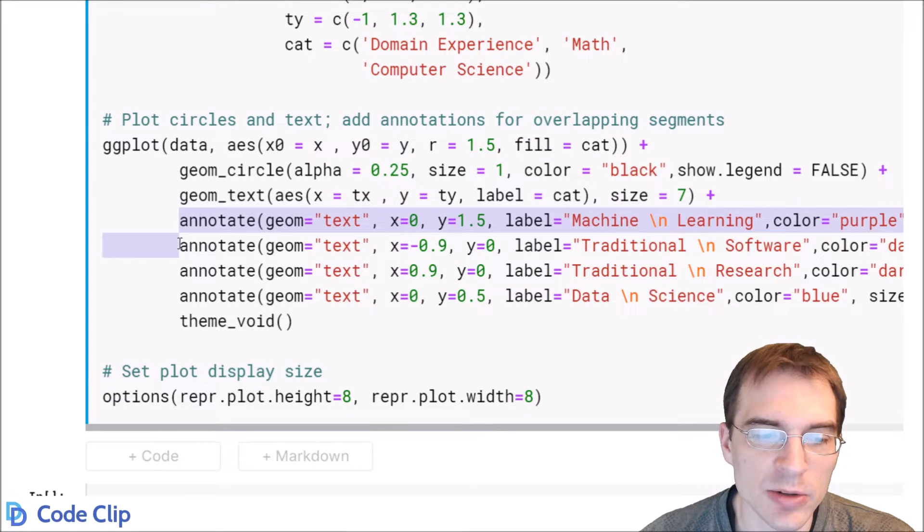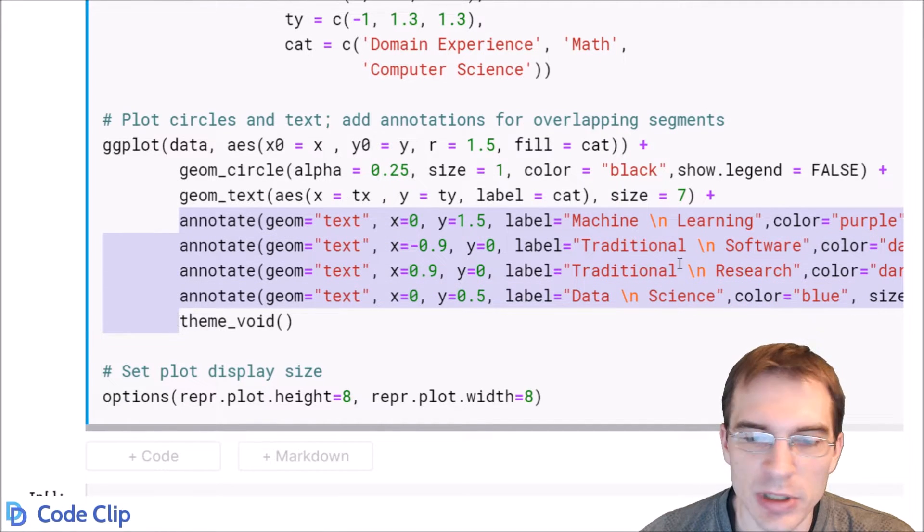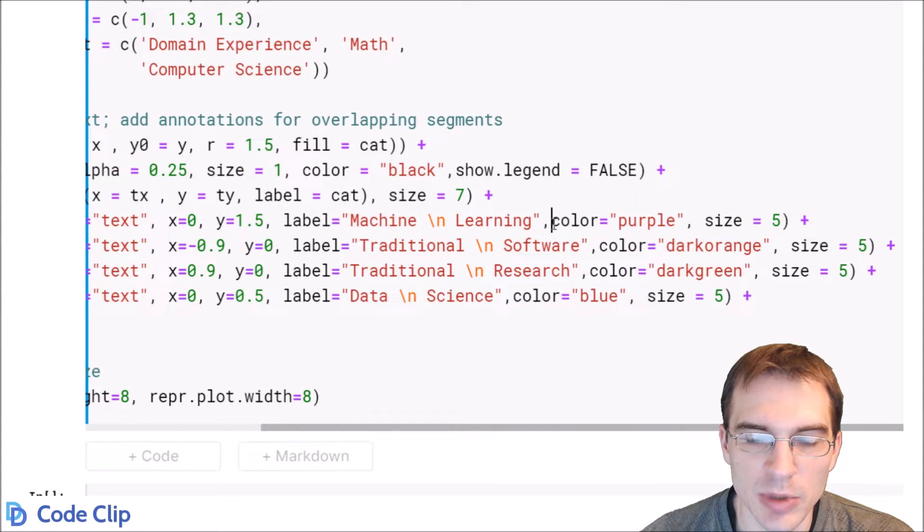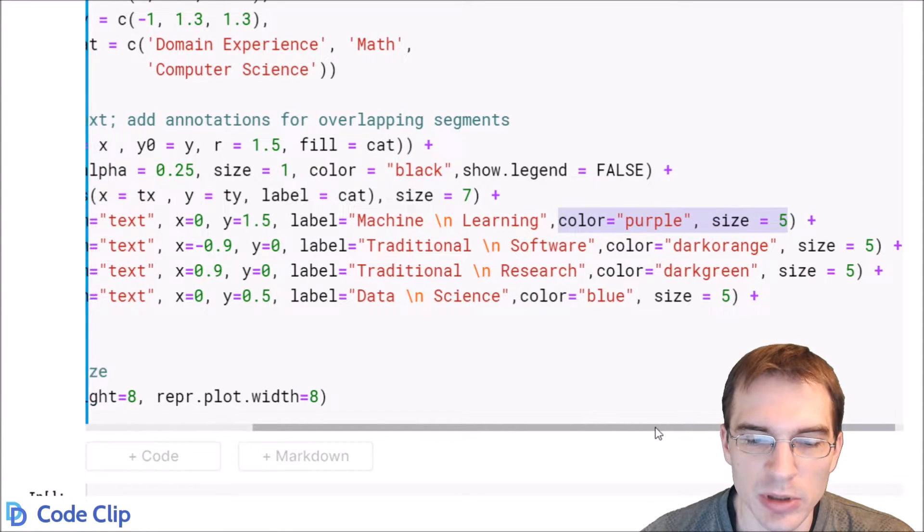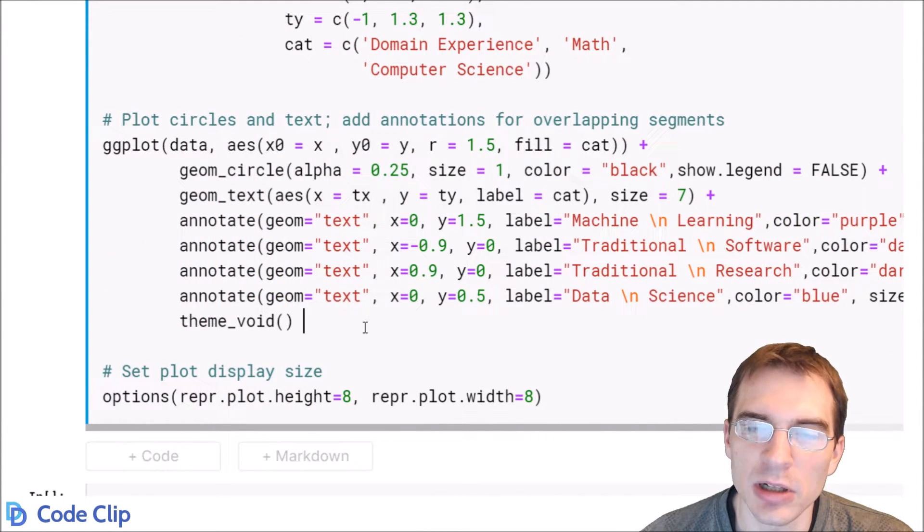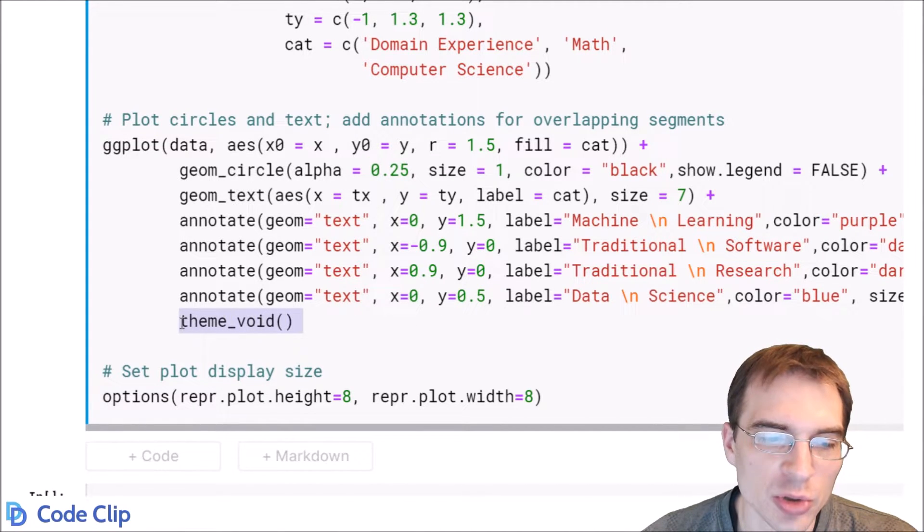So that's what these four annotation calls are here. We don't need to look at all the details of them, but basically we're adding a text geometry at the right position with a label and some color and size options that will allow us to fill in text within all of the different overlapping segments. And finally, we'll add theme_void to remove the various background plotting and axes because we don't really want that in this sort of plot.